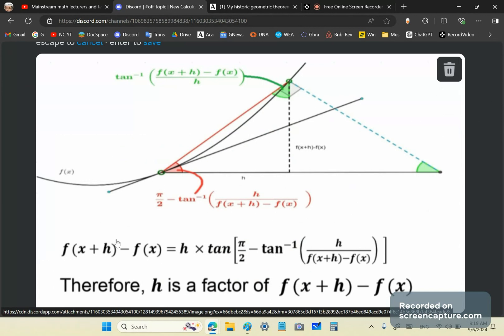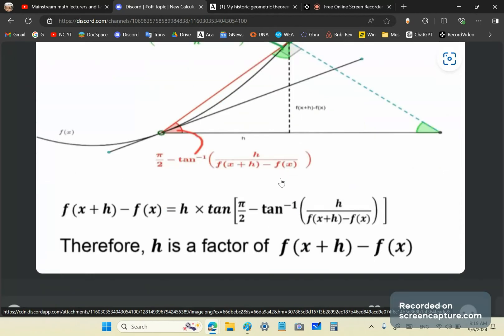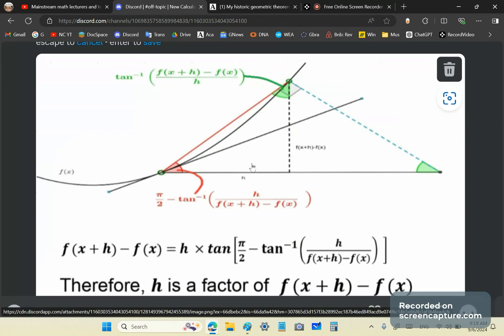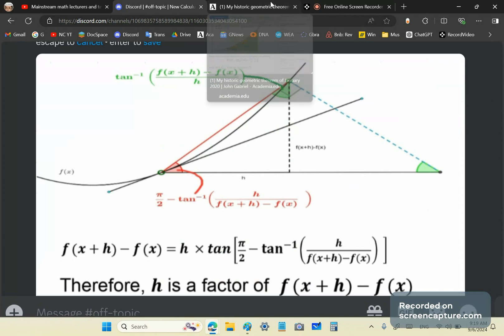So look at this diagram, study what I've written down here, and then you'll realize that h is a factor of this left-hand side here. It has to be because h times this expression is equal to the left-hand side. Marcus Klyver never got that, and he claims to have a master's or he's studying towards a master's in some Swedish university. So that's what I call the Marcus Klyver effect.